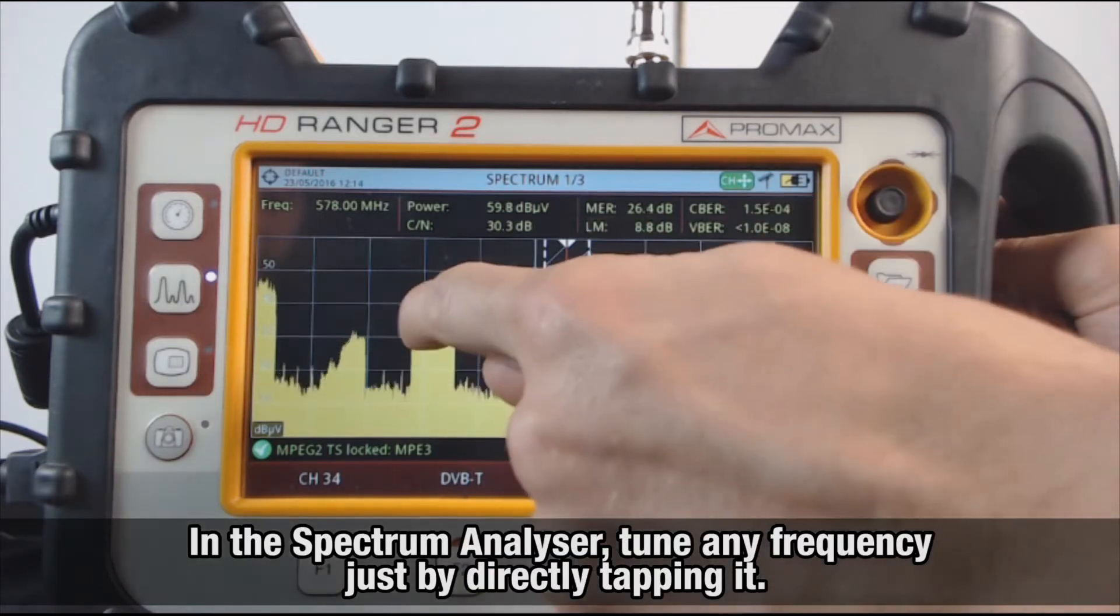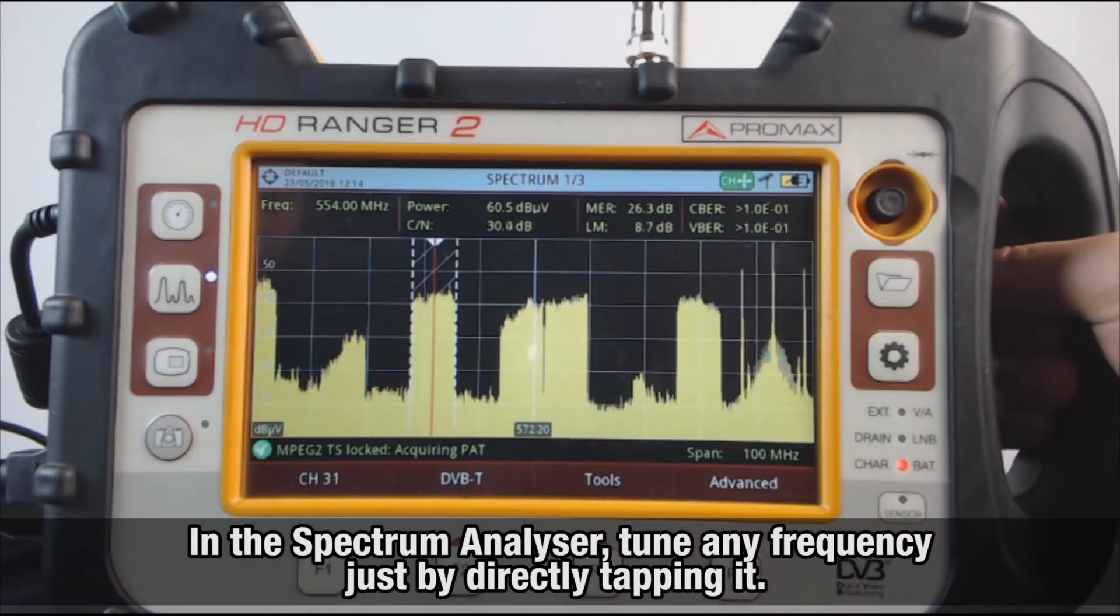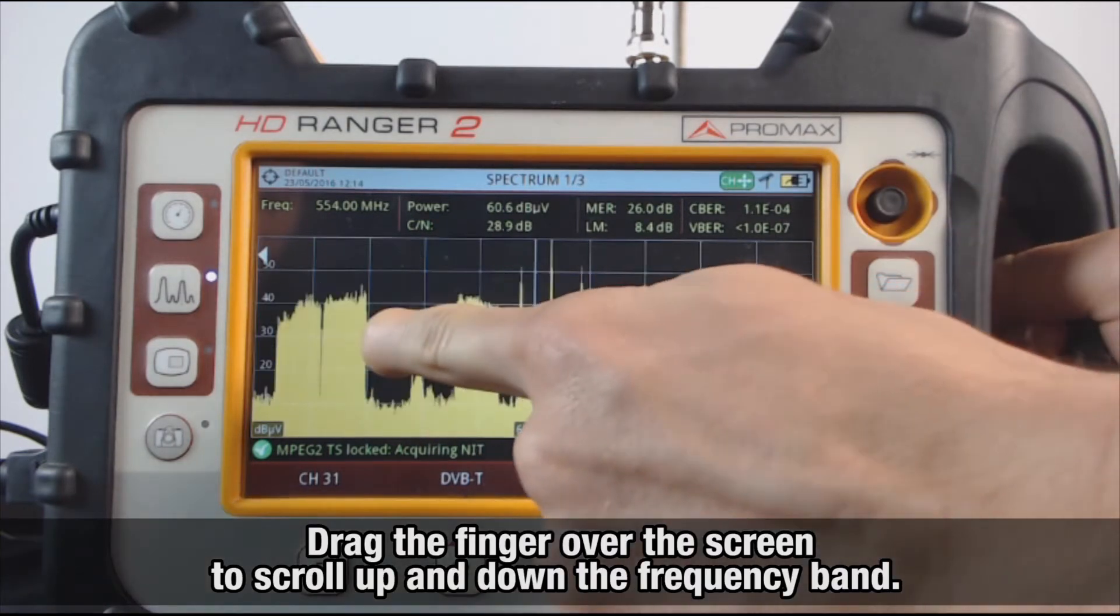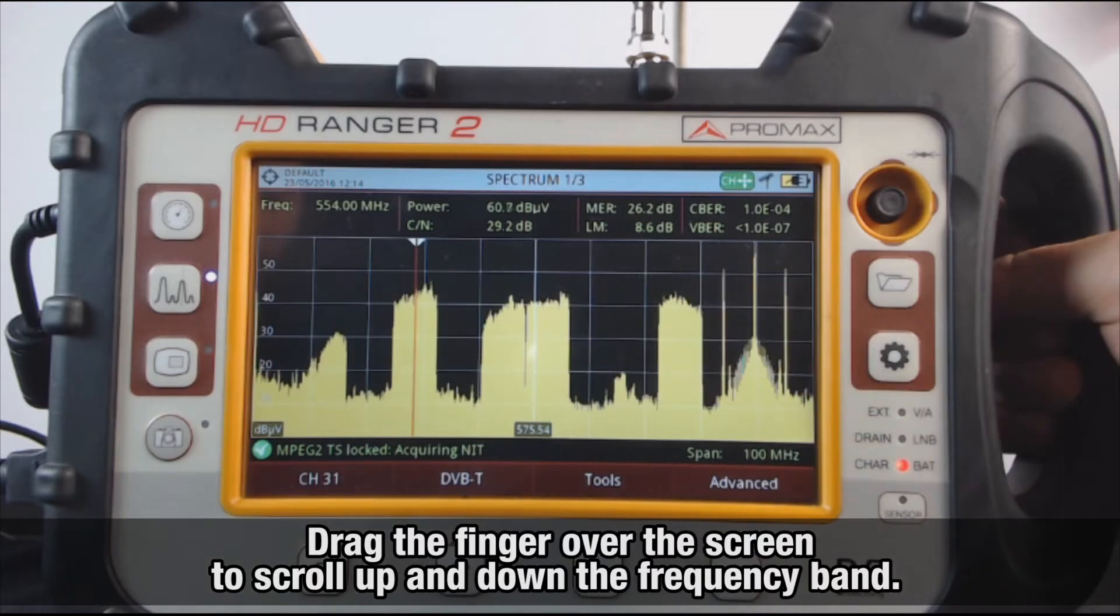You can tune any frequency just by directly tapping the point of interest in the frequency band shown in the screen. When we press the screen and drag our finger over it, we will be scrolling up and down the frequency band.